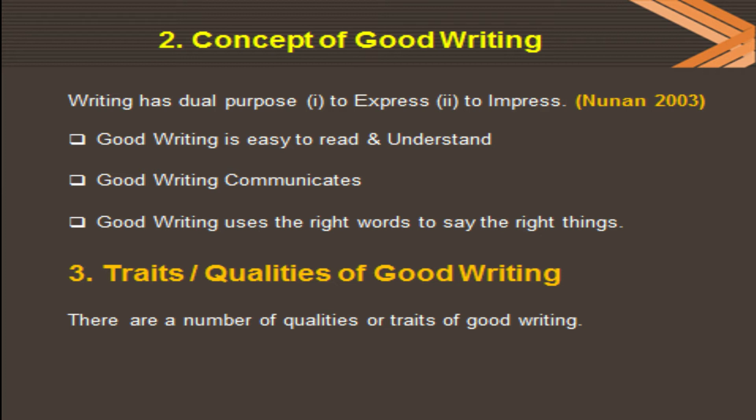Good writing uses the right words to say the right thing. This is a wonderful tip for new writers: choose the right words to express the right ideas. Good writing is a combination of good ideas and good words — right ideas matched with the right words. If that choice is achieved, the product is going to be good writing.